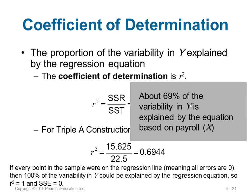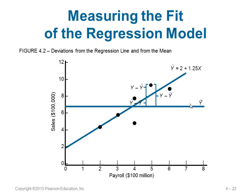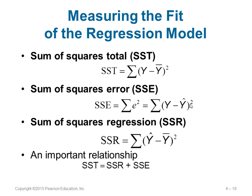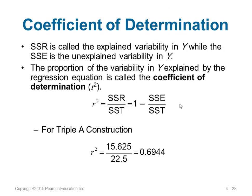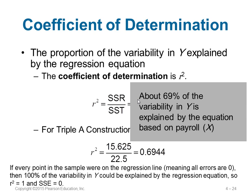If y and ŷ become the same — meaning what we predict equals the actual value — then SSE will be 0. If SSE is 0, then r² = 1 − SSE/SST = 1, meaning 100 percent of the variability is explained by the regression equation, so everything is matching perfectly. Currently, 69 percent is matching according to our calculation — ŷ is matching with y at 69 percent.